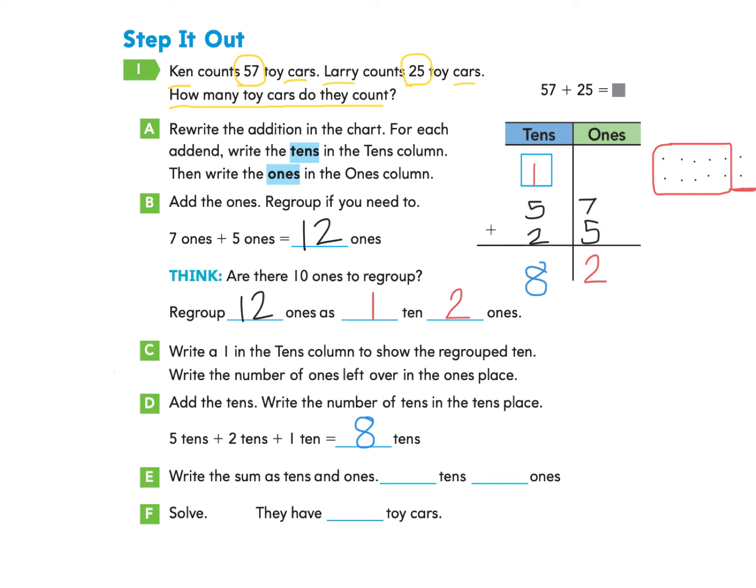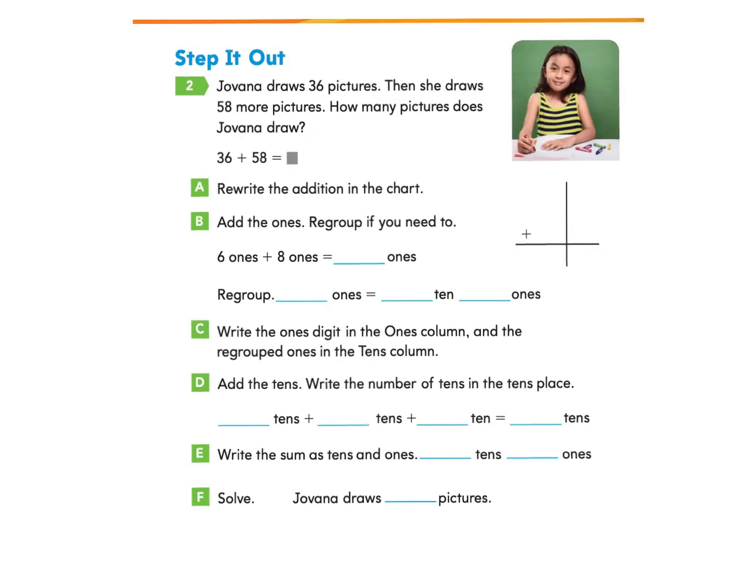When I add 57 and 25, I get the number 82. Now I'm going to follow the direction. Write the sum as tens and ones. So I found that I had 8 tens and 2 ones. And so now I can solve this problem and say they have 82 toy cars together.